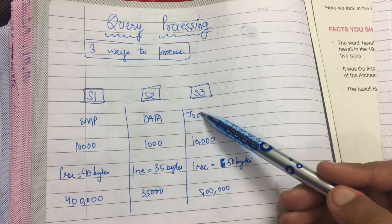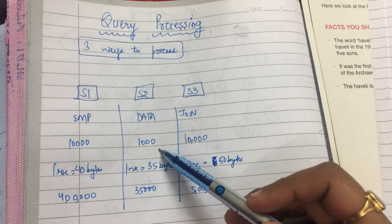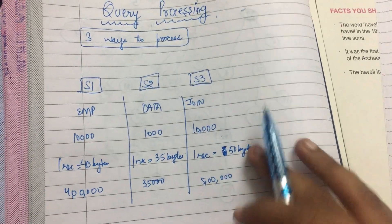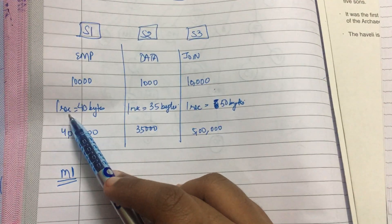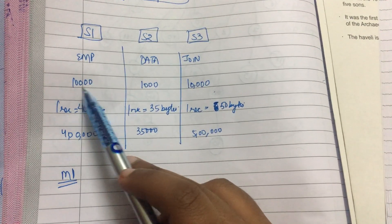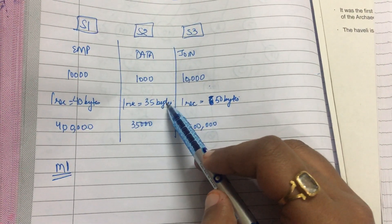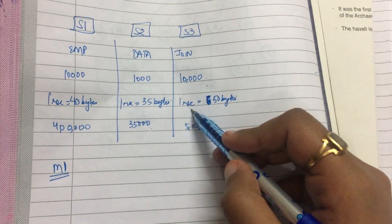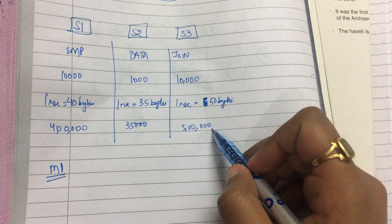and the join of the two. I have 10,000 record entries for employee, I have 1,000 entries for data, and the join has 10,000 entries. What is happening is one record is of 40 bytes, so 10,000 records will be of 4 lakh bytes. One record is 35 bytes, so 1,000 records will be of 35,000 bytes. One record is 50 bytes, so 10,000 records will be of 5 lakh bytes.